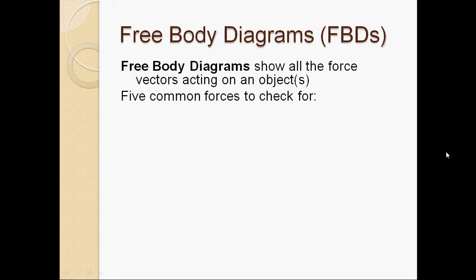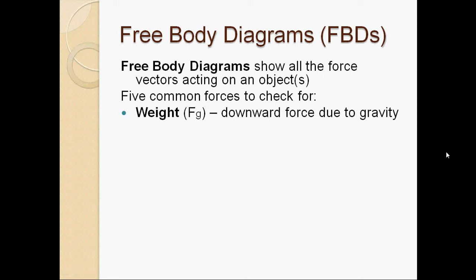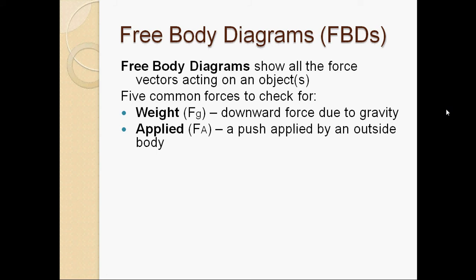Let's talk about free body diagrams — pictures that show all the different forces acting on an object at one time. There are five main types of forces to check for. First is weight, a downward force due to gravity, represented as F with a subscript G. Another is an applied force — any force directly exerted upon the object, like consciously pushing a chair.